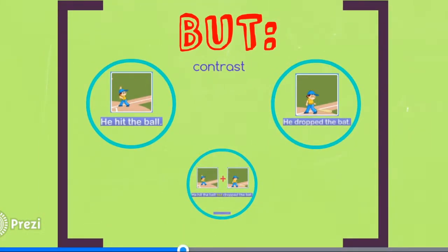Our next conjunction is but. But is used to join sentences with unlike ideas. You can also remember but when you want to contrast two different ideas.